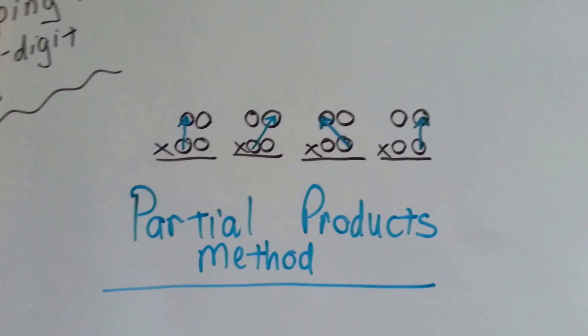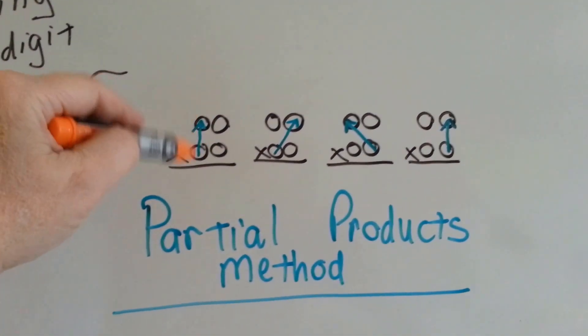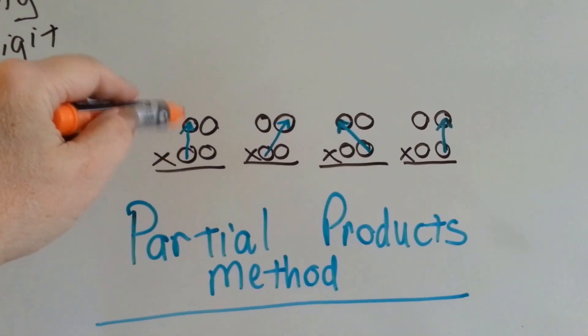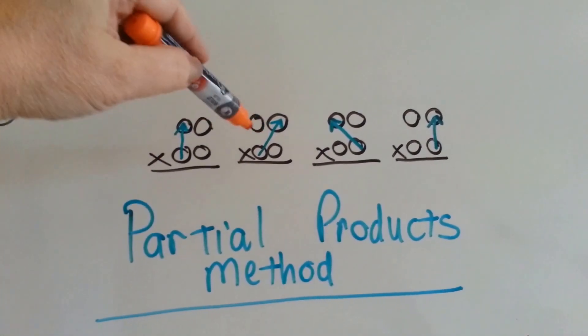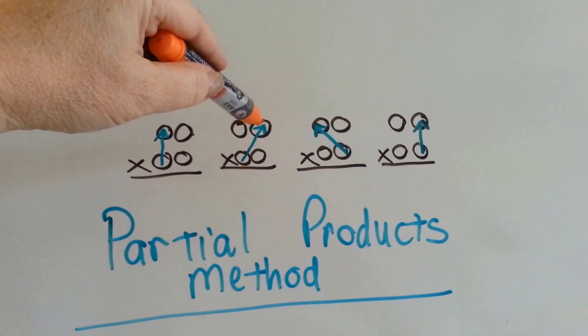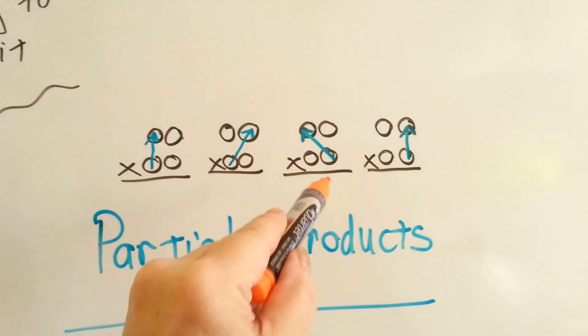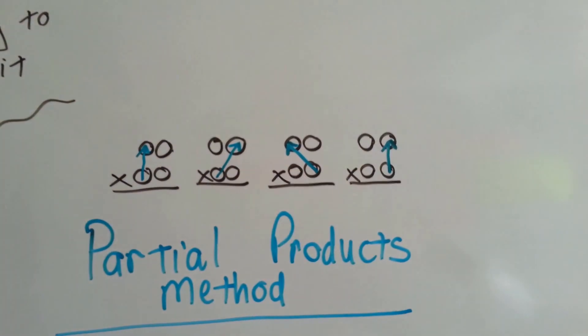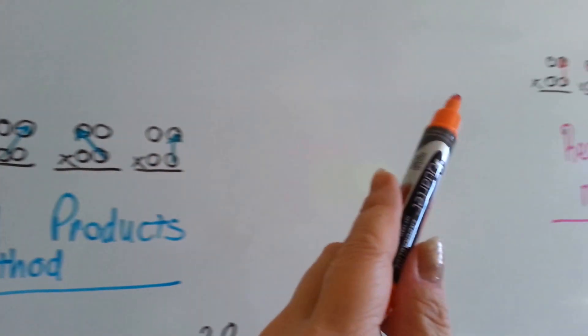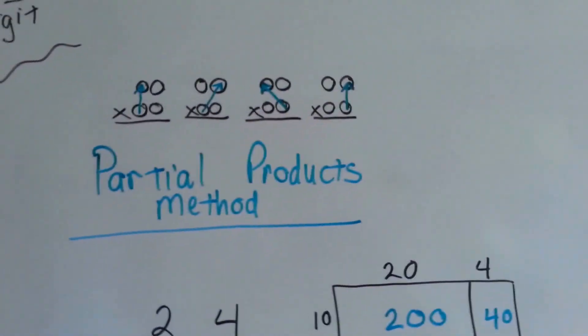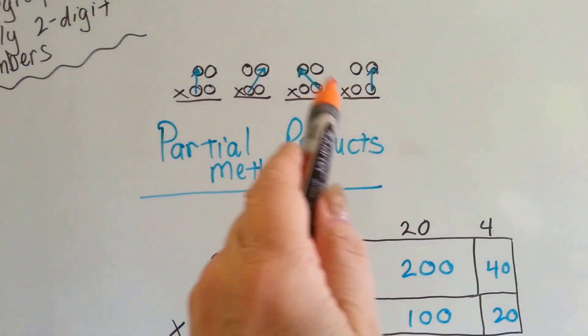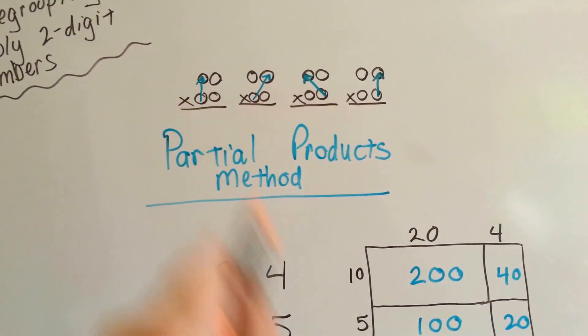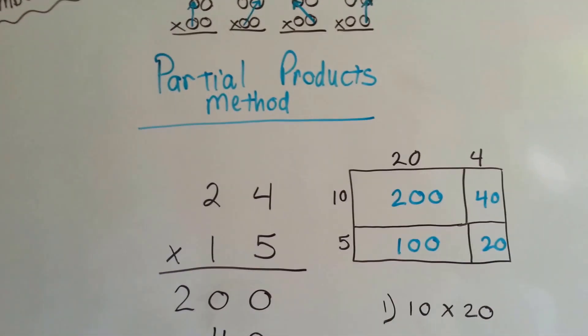In the partial products method, the first thing we multiply is the tens place right here. The next thing we multiply is this tens place to the ones place up here. Then we multiply this ones place to that tens place, and then the ones to the ones. In the regrouping method, it's the opposite. That's the first one, that's the second one, that's the third one, and that's the last one.